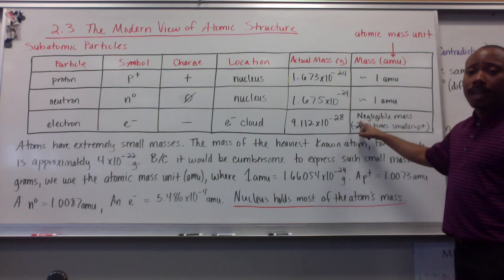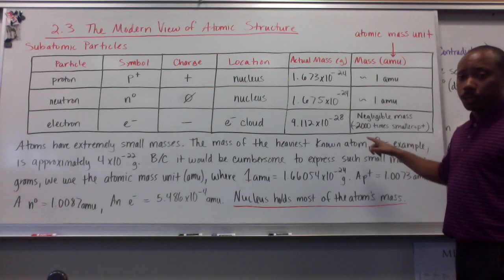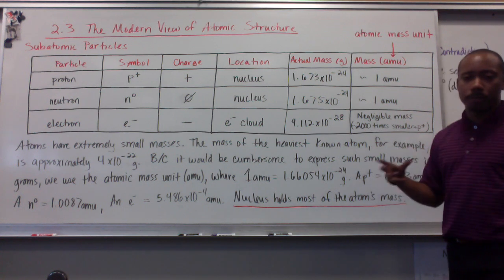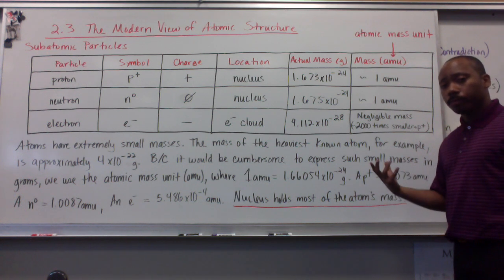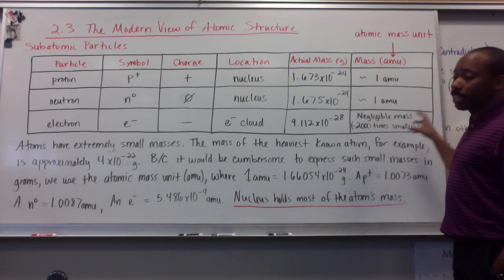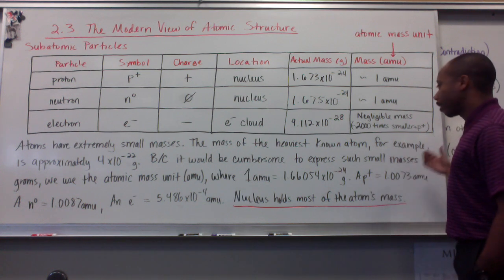And electrons have a mass of 5.486 times 10 to the negative 4th amus. We call this mass negligible. It is around 2,000 times smaller than a proton. It doesn't contribute much mass to the atom at all. So, oftentimes it's seen as a negligible mass, but it is important to note that they do have mass.